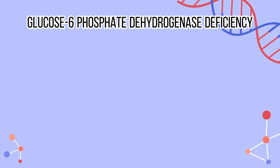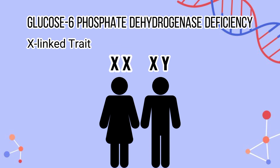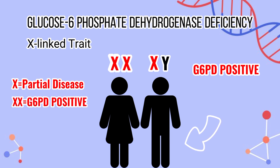Glucose-6-phosphate dehydrogenase deficiency is an X-linked trait, meaning the disease can be positive in patients with defective X chromosomes. A man has one X and one Y chromosome, while a woman has two X chromosomes. This makes men more susceptible because once a man's X chromosome becomes defective, they will already have the disease. For women, if only one X chromosome is defective, they have a partial or mild G6PD deficiency. If both X chromosomes are affected in a female, she is also positive for G6PD, though this is very unlikely.